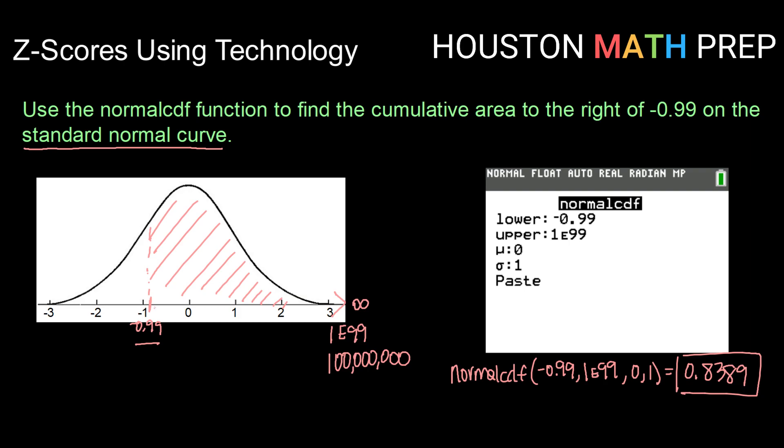One thing that's nice about technology here is that we just found the area above a particular z-score without having to do 1 minus the area below, like you would if you were using a z-table. That is one thing that can be nice about using technology.